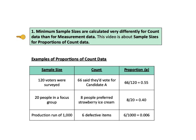A proportion is a percentage expressed as a decimal. For example, 120 voters were surveyed; 66 of the 120 said they'd vote for candidate A, so 66 divided by 120 equals 0.55 — the proportion planning to vote for candidate A. In a focus group of 20 people, eight preferred strawberry ice cream, giving a proportion of 8 divided by 20, which equals 0.40. For a process example, in a manufacturing run of 1,000 items, 6 were defective, giving a proportion of 0.006.